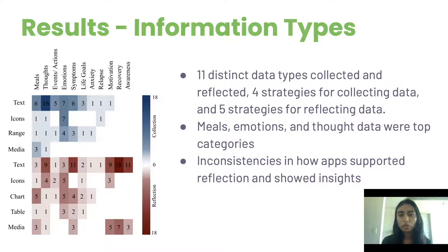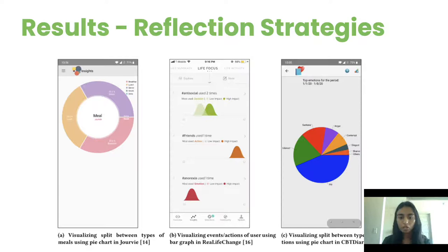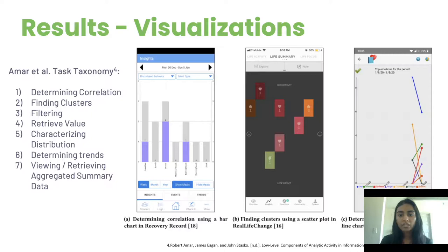Overall, we found apps were most consistent in using text entry to collect information. There were notable inconsistencies regarding how the apps displayed information, with some showing the data as text logs while others presented insights with more dynamic visualizations. This is a figure that shows some of the app screenshots we found. Because of this lack of uniformity, we referenced InfoViz guidelines to gauge how effective these apps' methods are for reflection. We used Amar et al.'s task taxonomy to organize the visualization capabilities using the goals they allow users to perform.